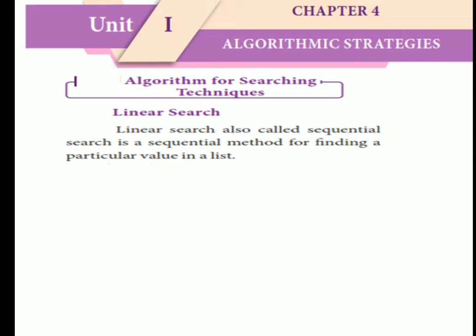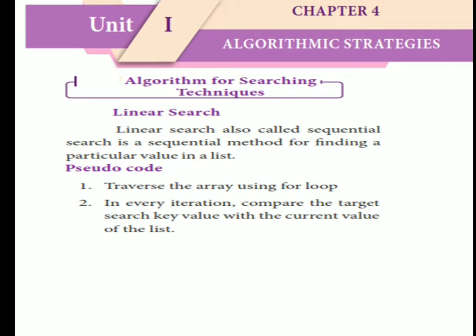Linear search, also called sequential search, is a sequential method for finding a particular value in a list. Pseudo code: Traverse the array using a for loop. In every iteration, compare the target search key value with the current value of the list.